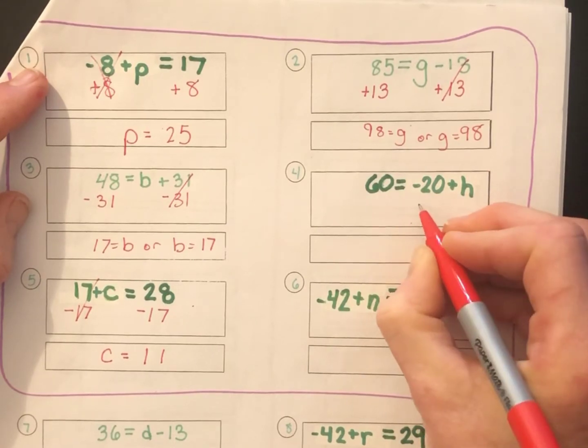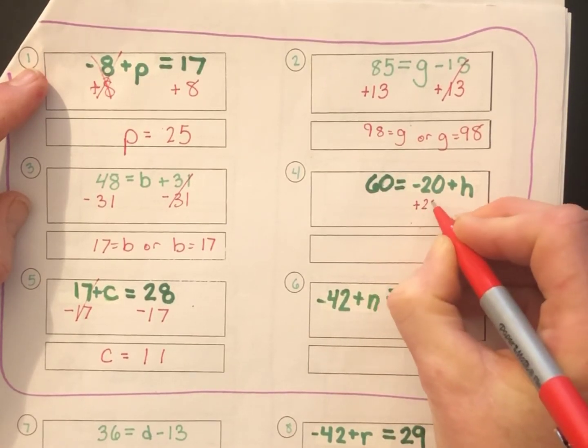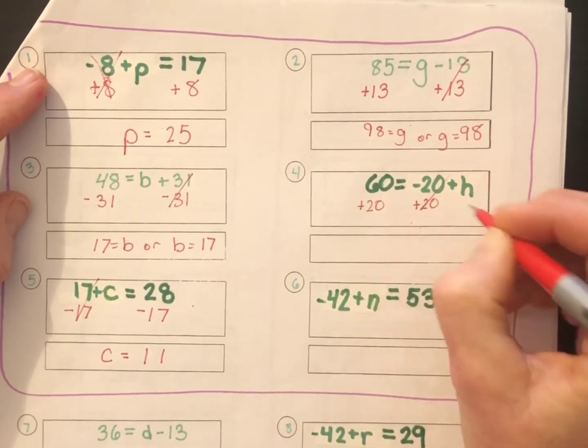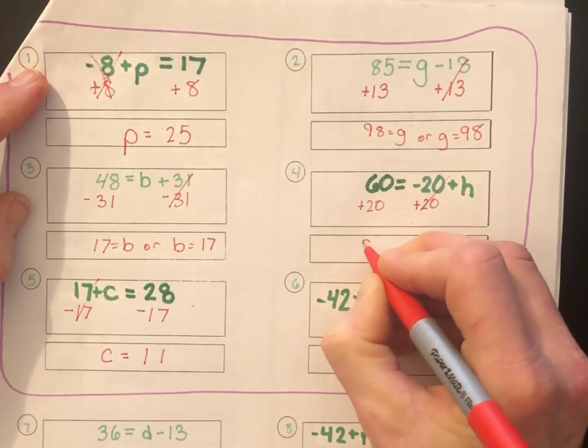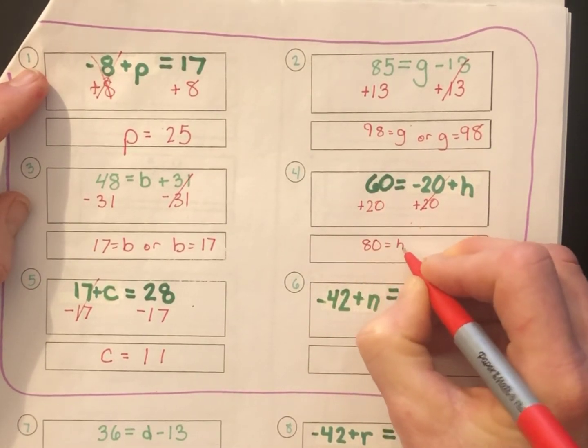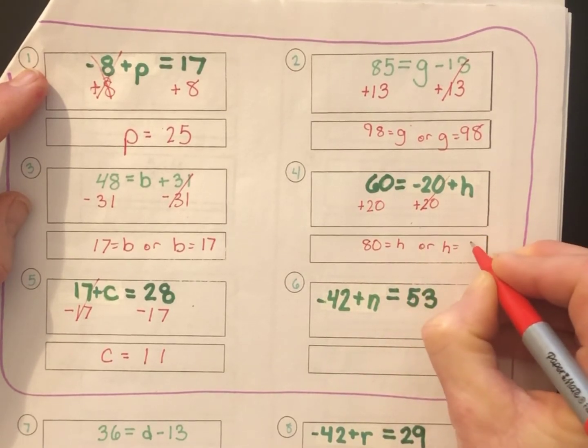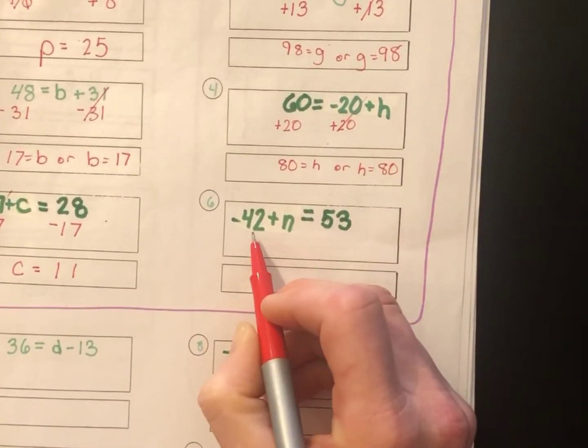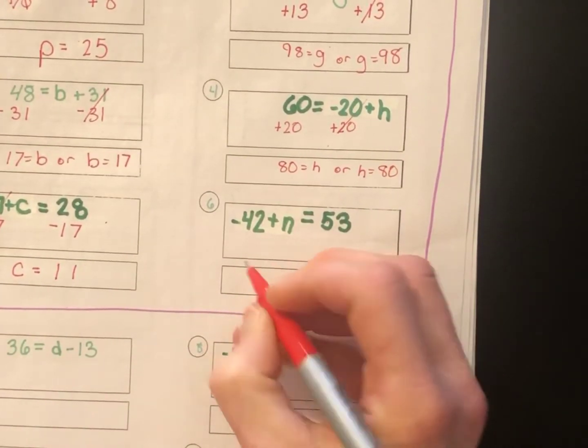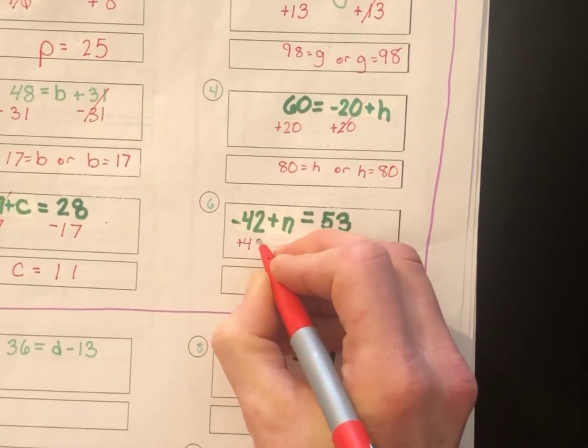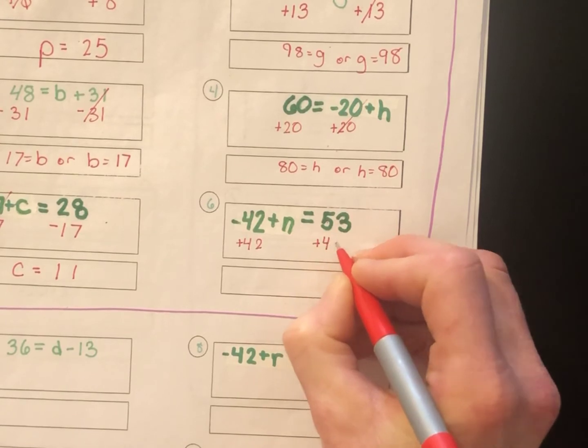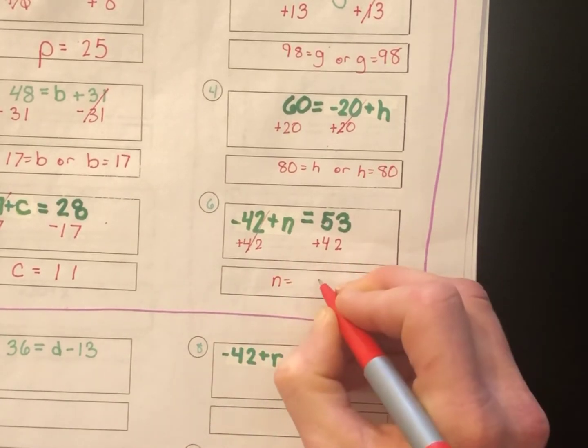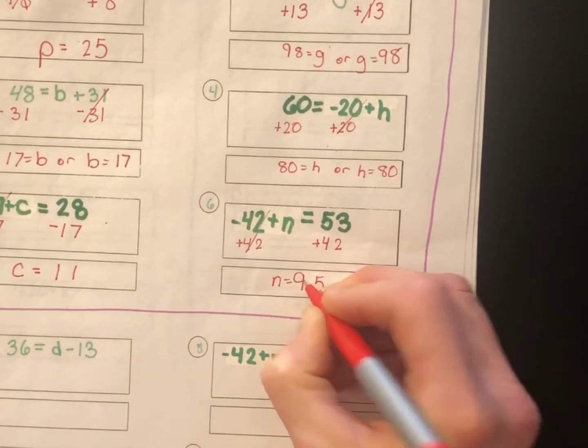Number 4, 60 equals negative 20 plus h. I have a negative 20 with the h, so I'll add 20 to both sides. That cancels out. I'm left with 60 plus 20 is 80 equals h, or h equals 80. Number 6, negative 42 plus n equals 53. The opposite of negative 42 is positive 42. So, by adding 42, I'll get rid of the negative 42, and I get n by itself. n equals 95.